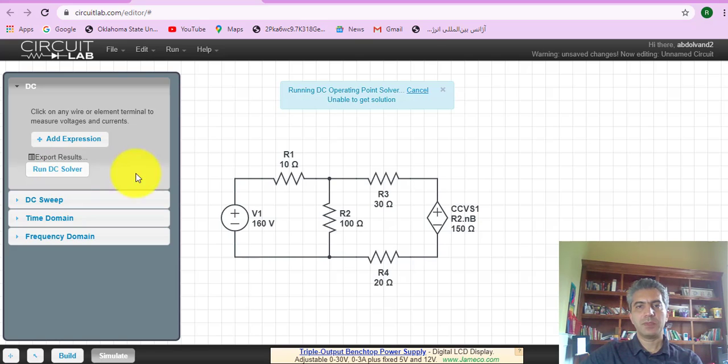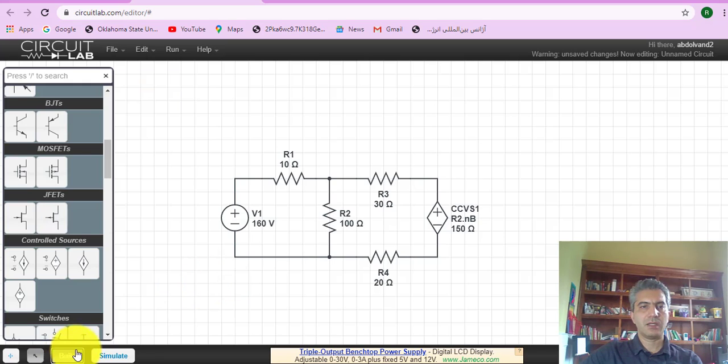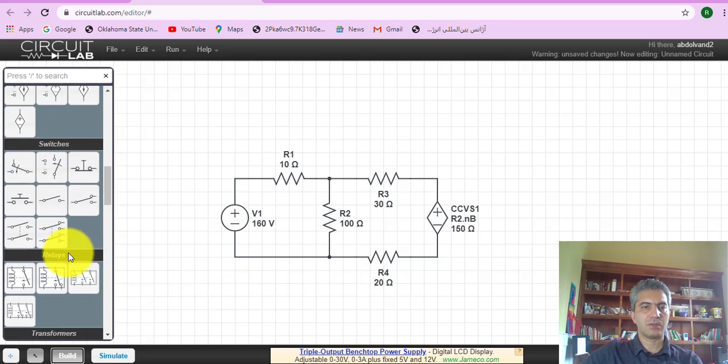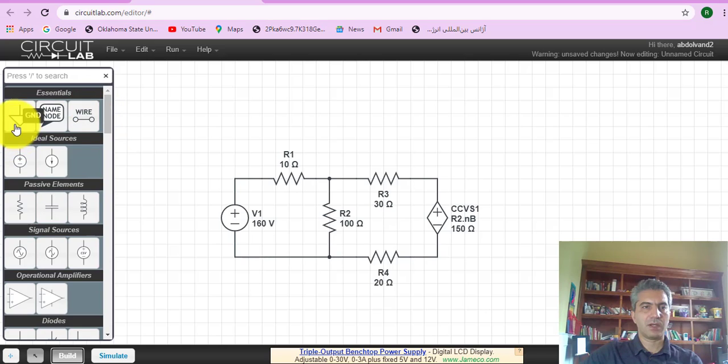So hit run and it says that everything is in DC open point. Oh, we have this problem. I forgot to define the ground. So let's go and define the ground. My ground would be right here.